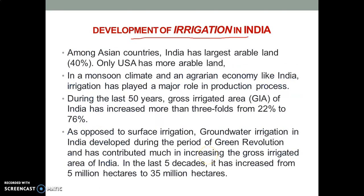After 1947, among the Asian countries, India has the largest arable land — that is, the largest land available for agriculture. Almost 40% of India's total land is utilized for agriculture. Only the USA has more arable land. In a monsoon climate and an agrarian economy like India's, irrigation plays a very important role in the production process, either directly or indirectly.